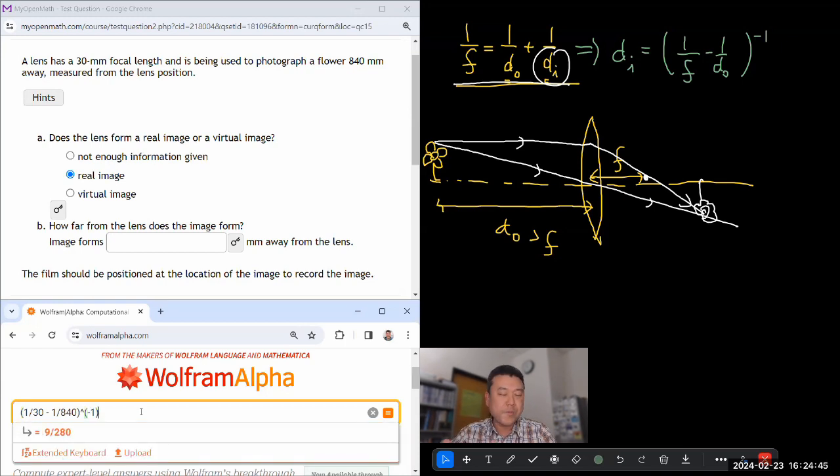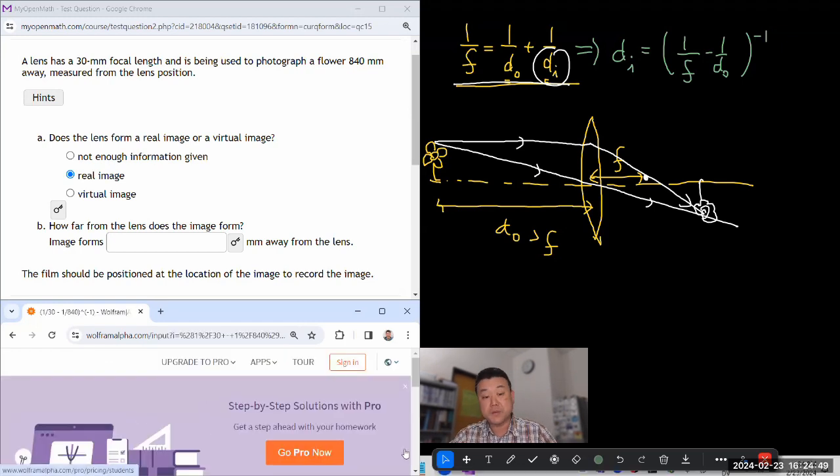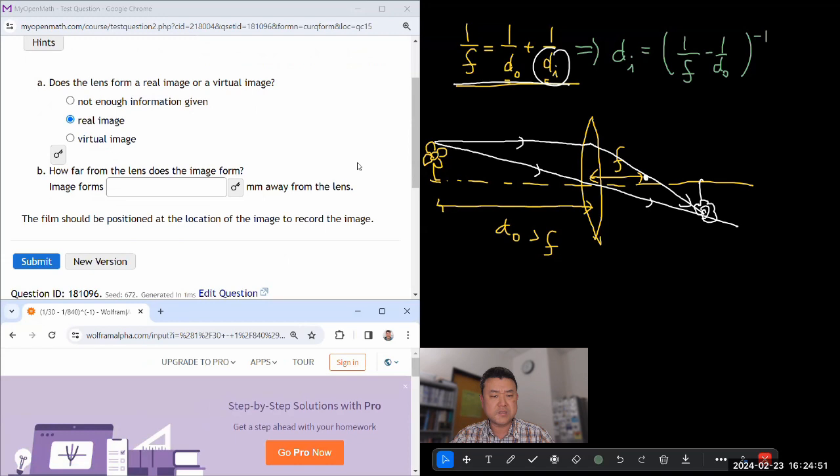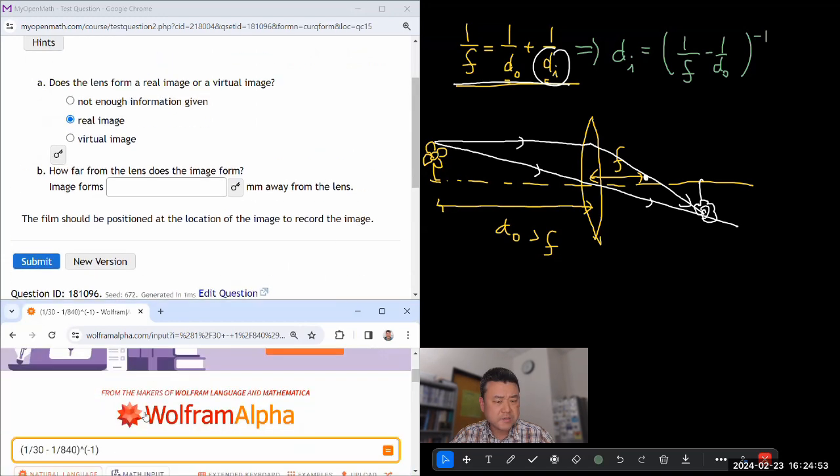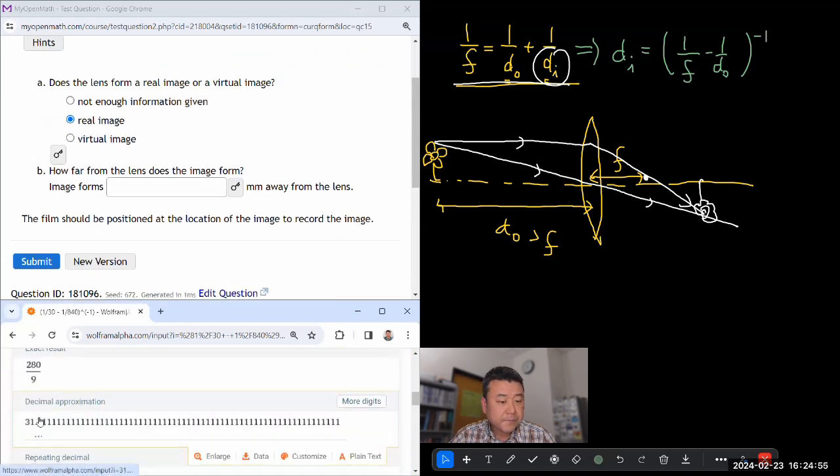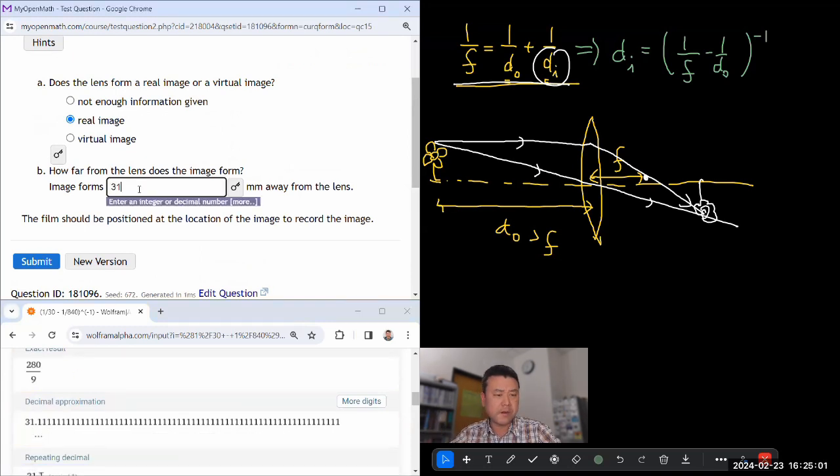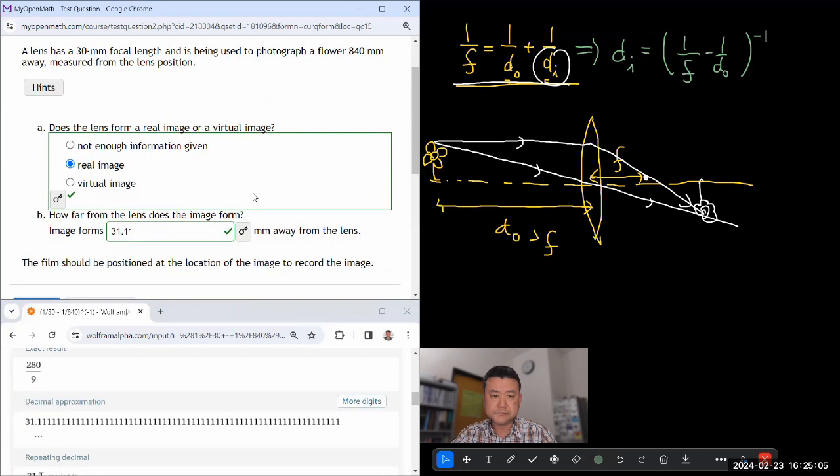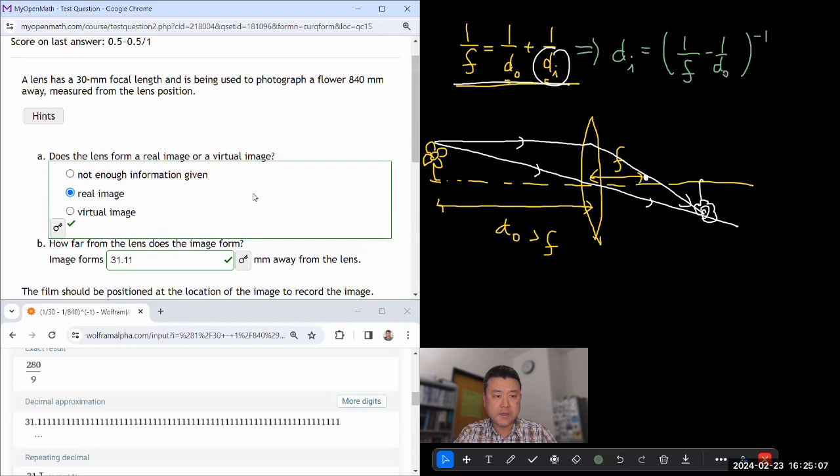I'm omitting the units and keeping everything in millimeters. So I should get millimeter for my image distance. It's going to be pretty short image distance, I think. Exactly. 31.11. A little bit away from the focal length. I think that makes sense. So that's that one question.